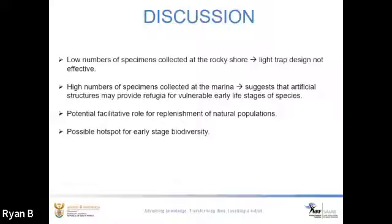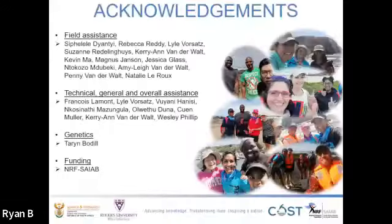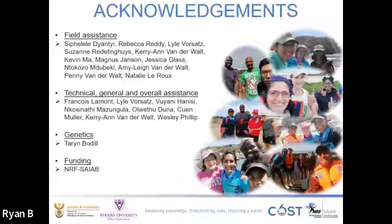High numbers of naturally occurring species in the marina suggest that artificial structures may provide shallow and protected areas which offer refuge for vulnerable early life stages of species, acting as potential nursery grounds, which can play a facilitative role for replenishment of natural populations. Overall, certain artificial structures within coastal areas could act as possible hotspots for early-stage biodiversity, and heightened conservation efforts should therefore be considered for these areas.